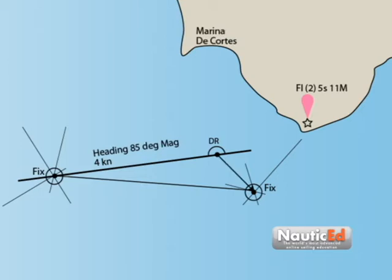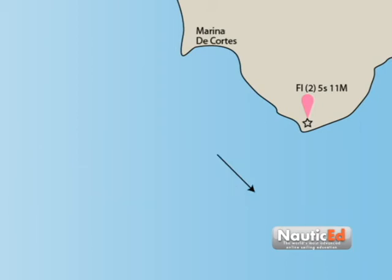Using a course protractor or the compass rose, measure the vector angle. We find it is 130 degrees magnetic. We find the vector length to be 6 nautical miles. Therefore the speed of the current is 6 nautical miles divided by 2.5 hours, which is 2.4 knots.